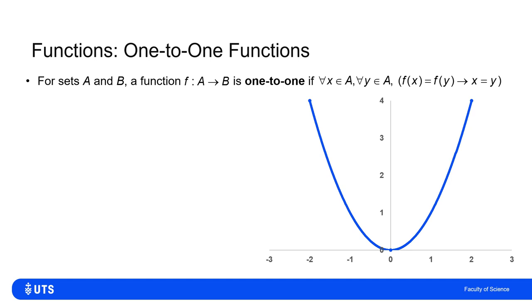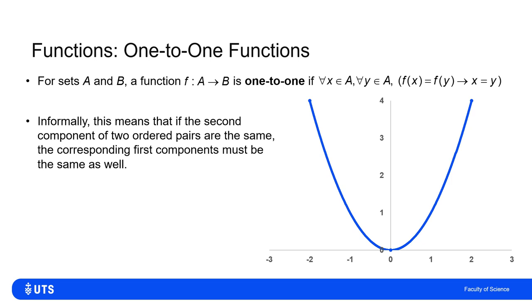A function is one-to-one if every time I pick an element x from A and a y from A, the only way that f(x) equals f(y) is if x equals y. This says that if the second components of ordered pairs are the same, then the corresponding first components must be the same as well.